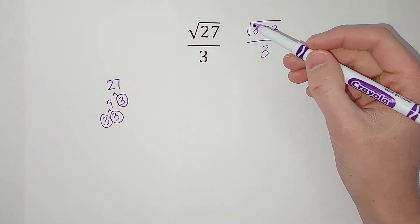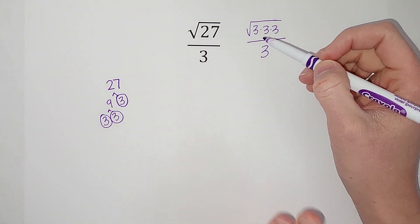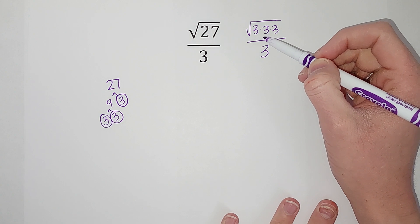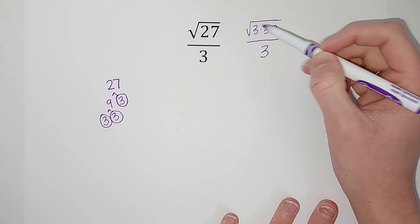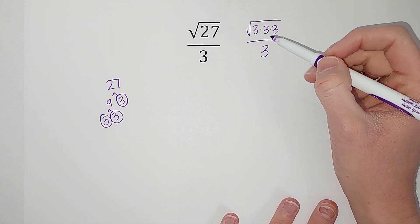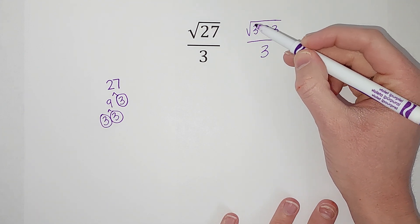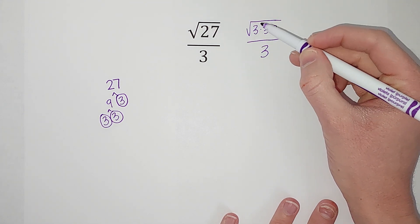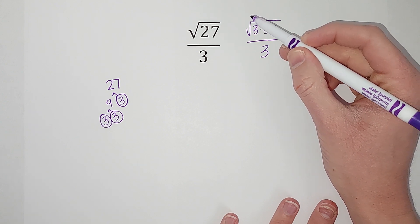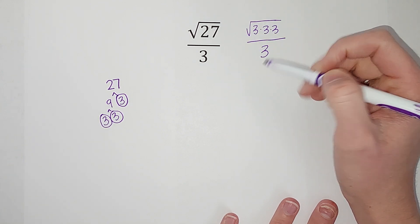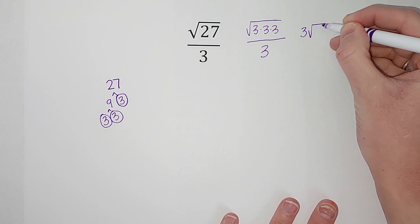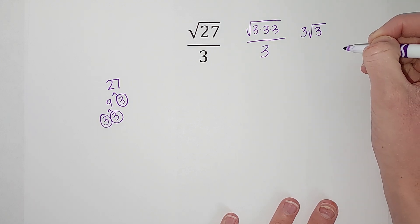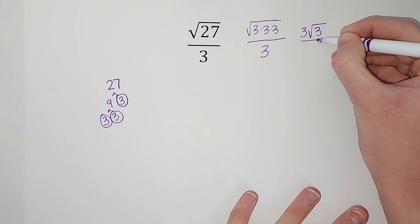So remember, the square root symbol is asking me what number multiplied by itself gives me 27. Well, I don't have a pretty one that gives me 27, but I do have these two 3s being multiplied by themselves, which means I can pull one of them out. So I'm gonna have a 3 on the outside and a 3 still on the inside.